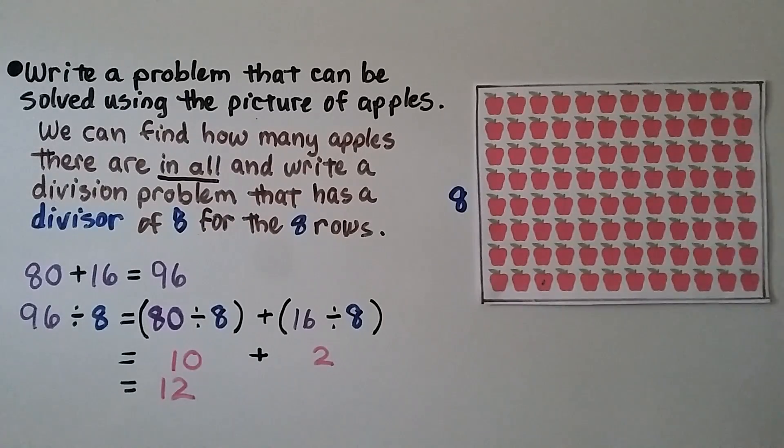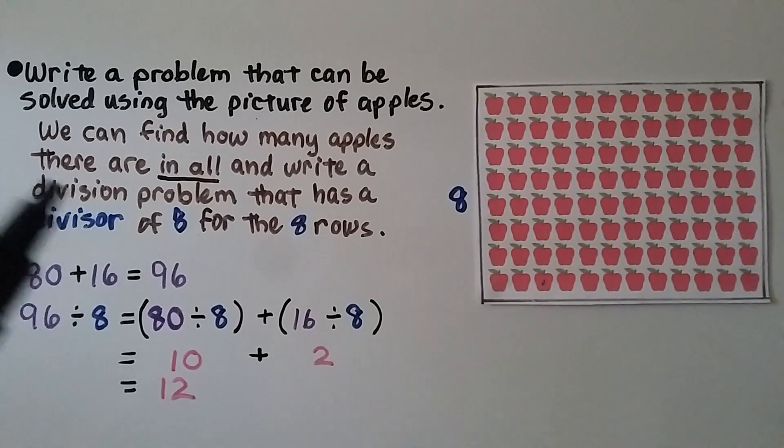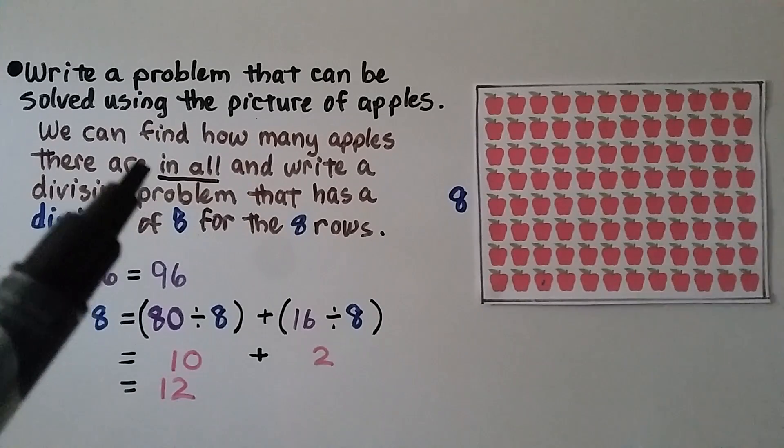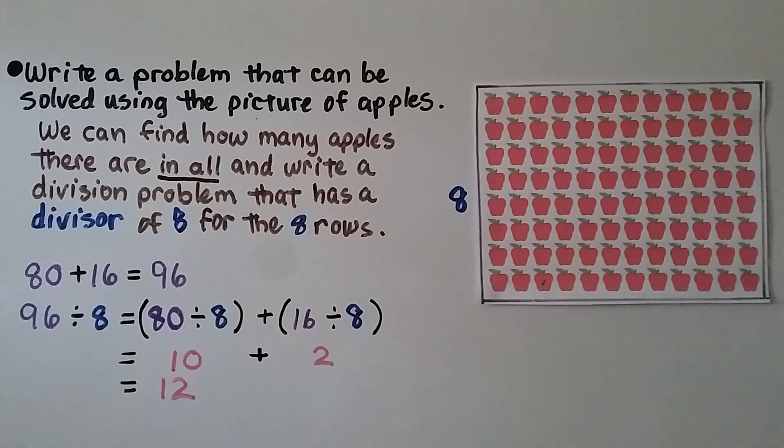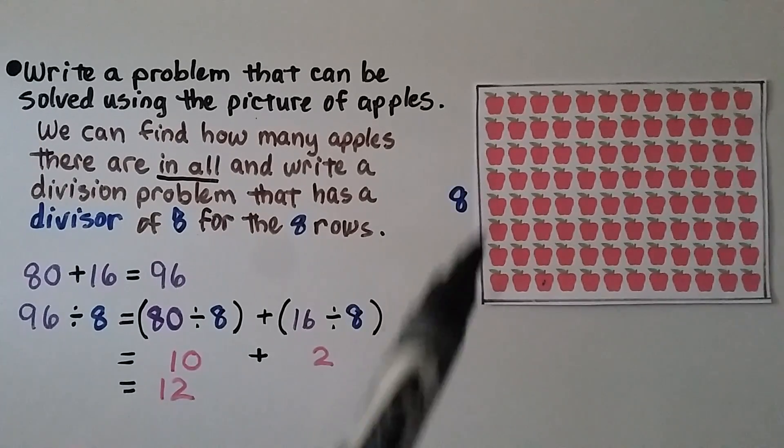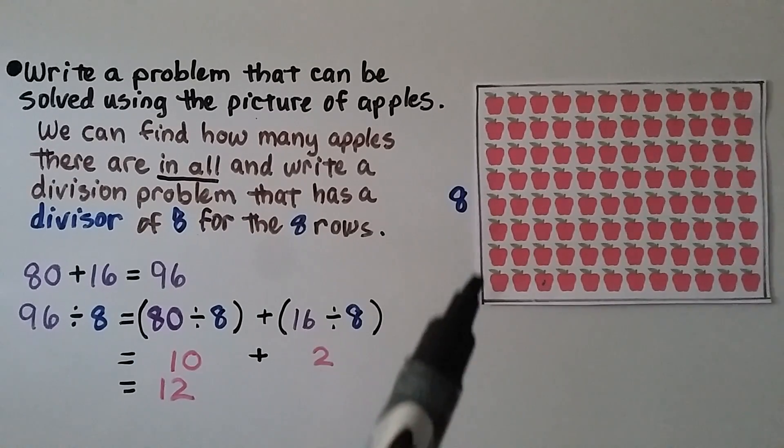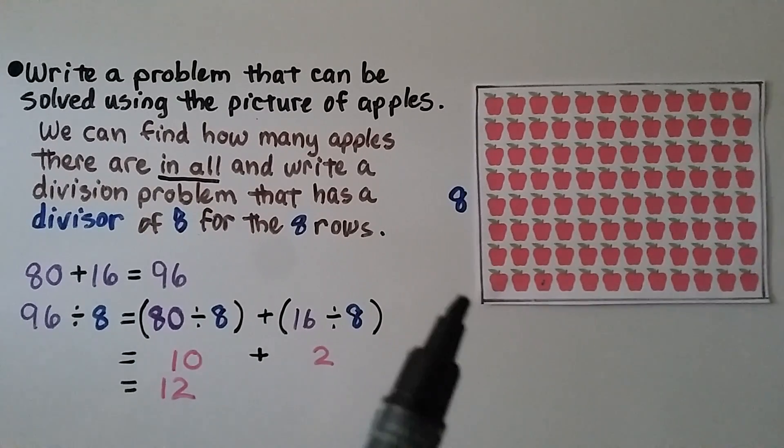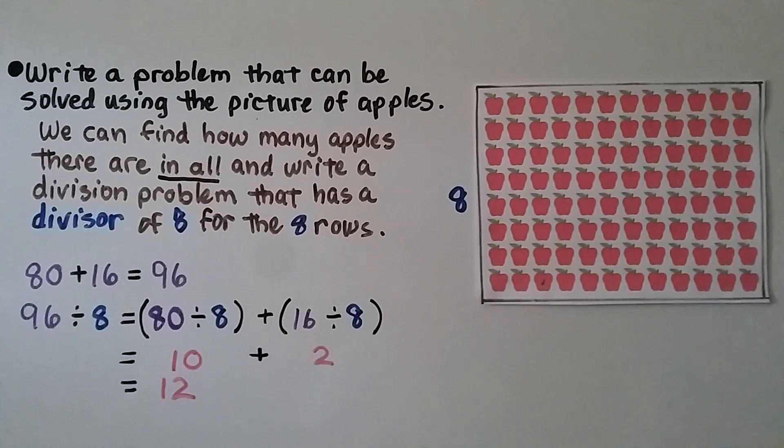We need to write a problem that can be solved using this picture of apples. So we can find how many apples there are in all. That will be our dividend. And we can write a division problem that has a divisor of 8 for the 8 rows. There's 8 rows of apples here. And we count them, and we can split them apart.